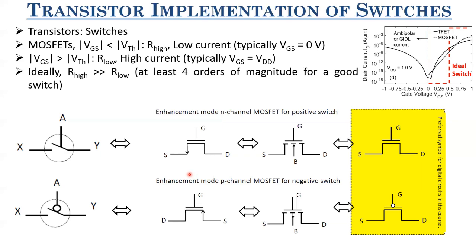These are the different symbols used for enhancement-mode N-channel MOSFETs. Why enhancement mode? Whenever VTH is positive for an N-channel MOSFET, it is enhancement mode. Whenever VTH is negative for a P-channel MOSFET, it is enhancement mode P-channel MOSFET. Enhancement mode means: at VGS = 0, if the device is off, it is called an enhancement mode MOSFET. For N-MOSFET, at VGS = 0 with no current between drain and source — that is enhancement mode.